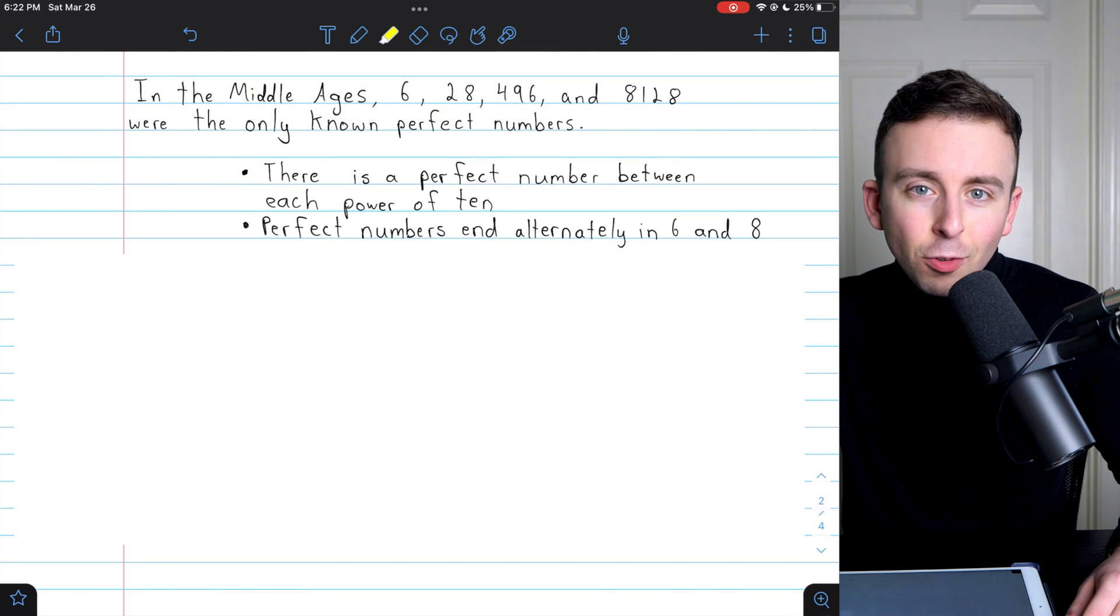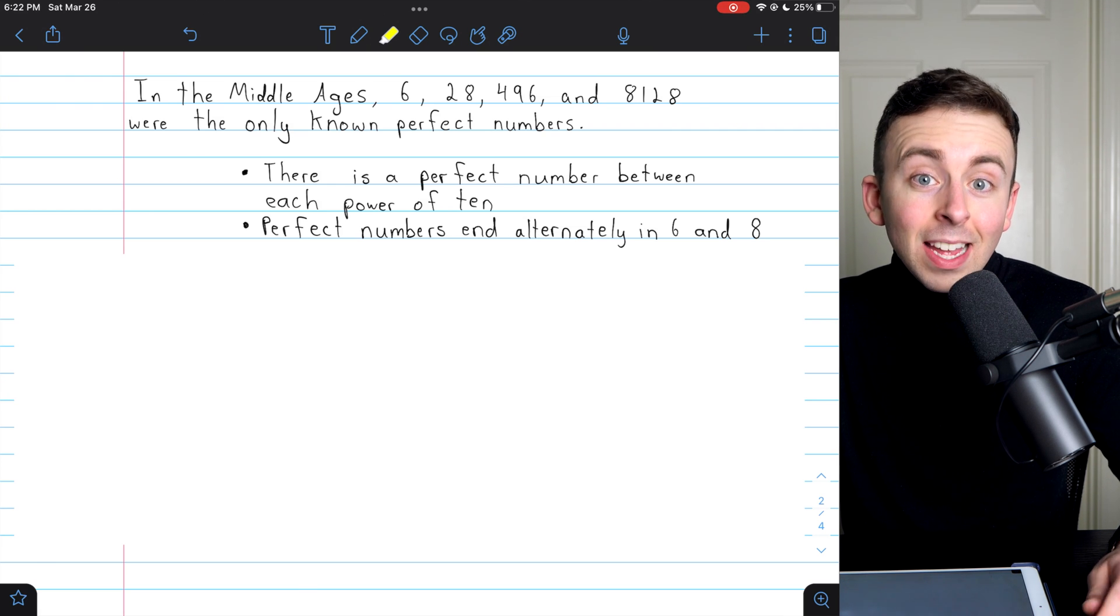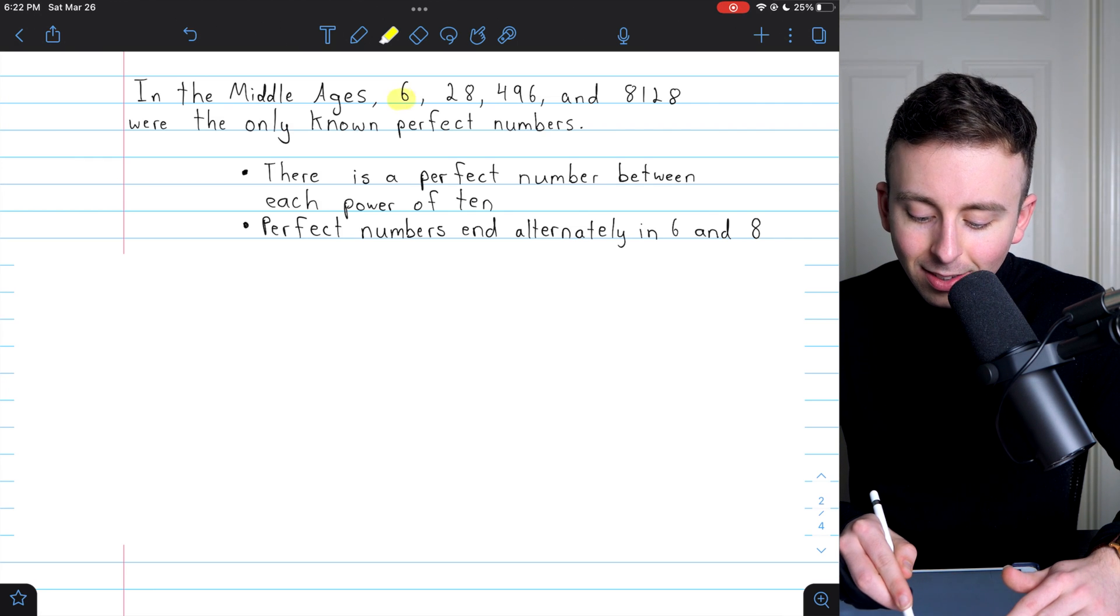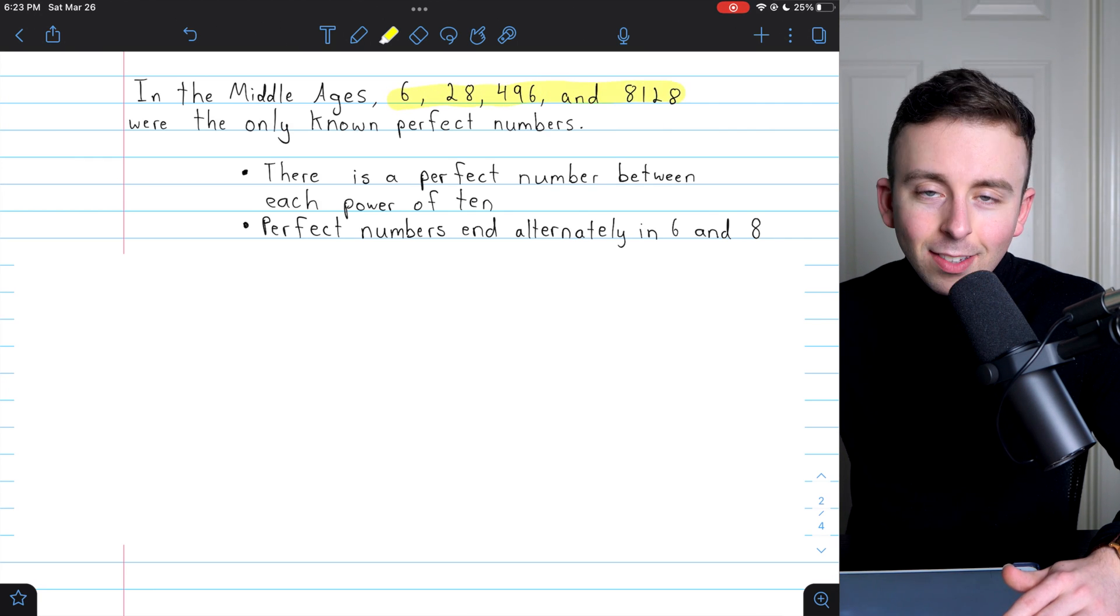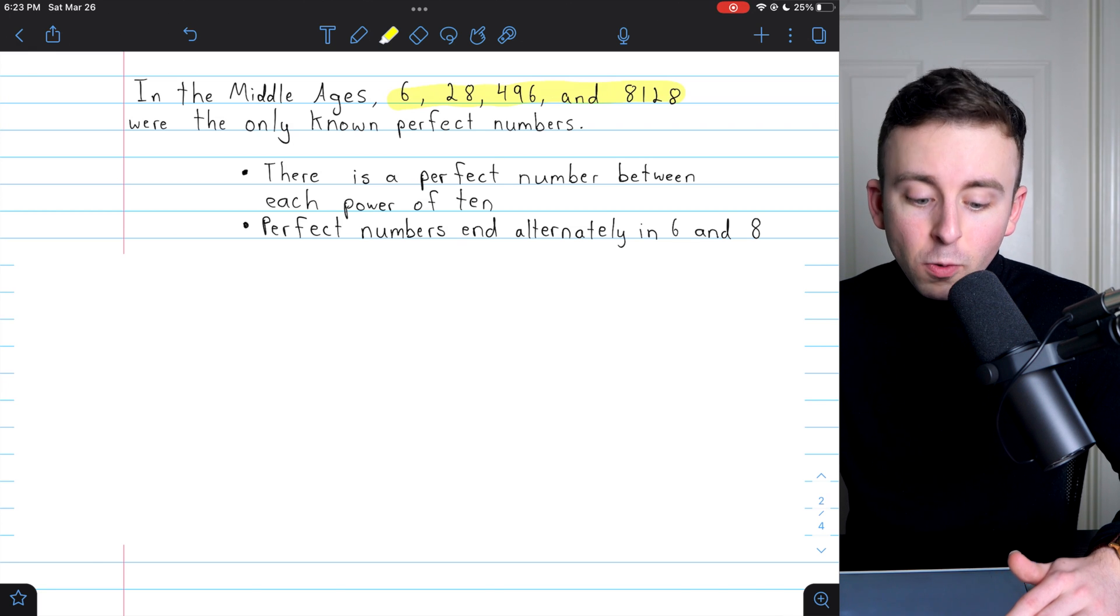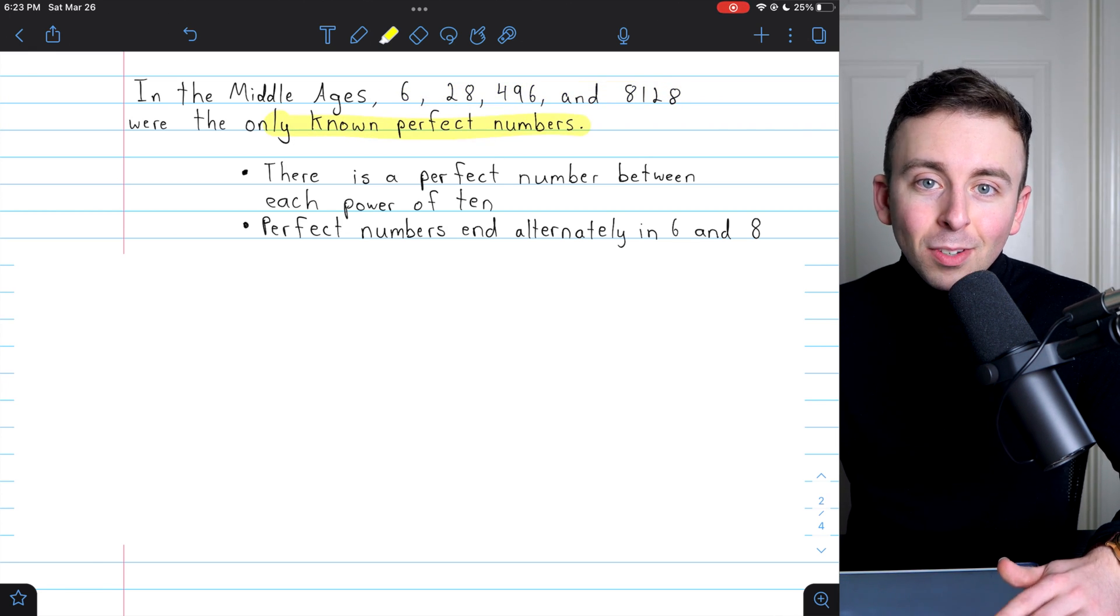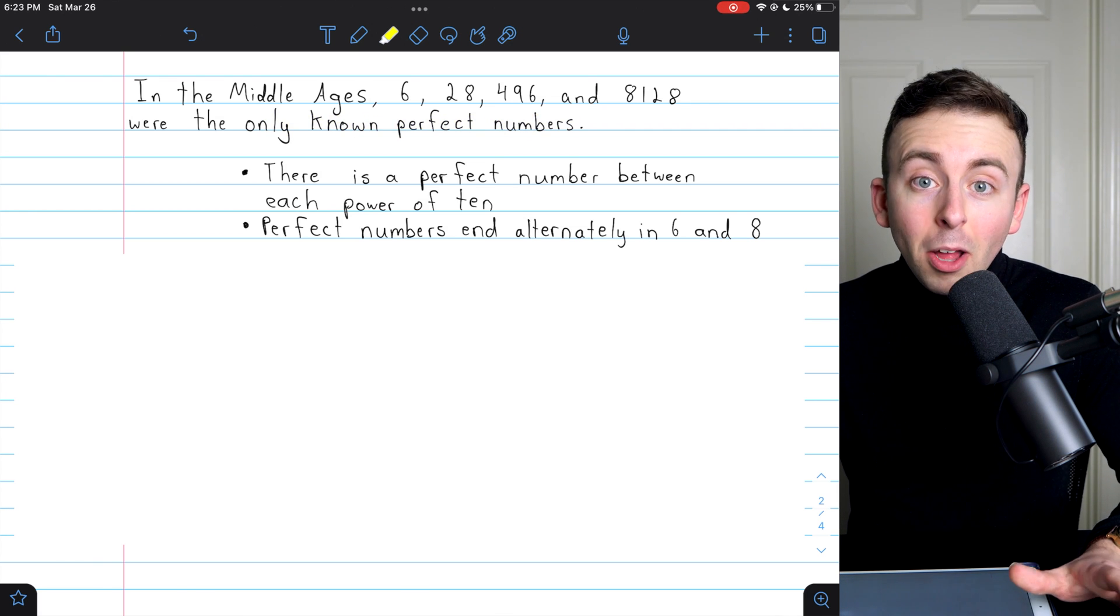Mathematicians have been conjecturing things and proving things about perfect numbers for quite some time, but since they get so big and are so rare, they are difficult to find, especially without computers. In the Middle Ages, 6, 28, 496, and 8,128 were the only known perfect numbers.